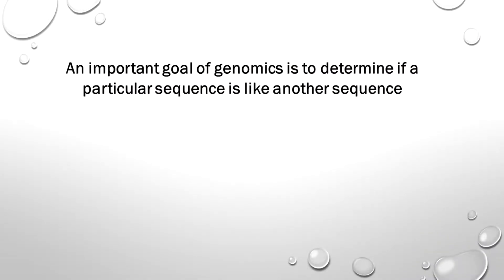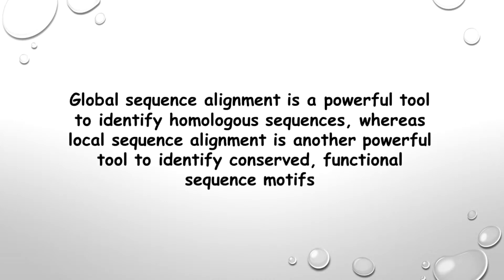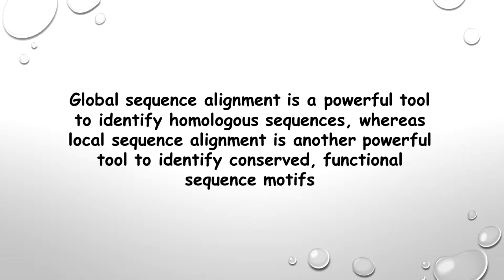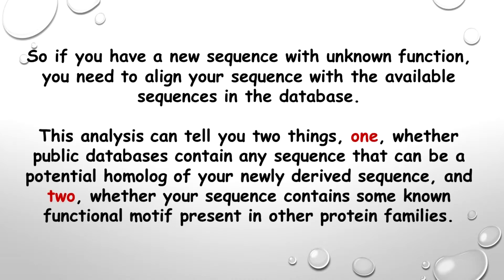An important goal of genomics is to determine if a particular sequence is like another sequence. This is accomplished by comparing the new sequence with sequences that have already been reported and stored in the databases. Global sequence alignment is a powerful tool to identify homologous sequences, whereas local sequence alignment is another powerful tool to identify conserved functional sequence motifs. So if you have a new sequence with unknown function, you need to align your sequence with the available sequences in the database.